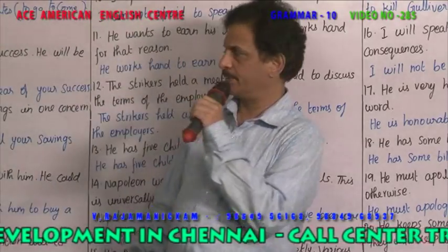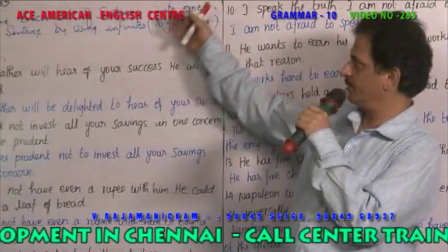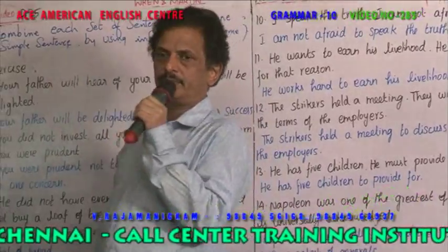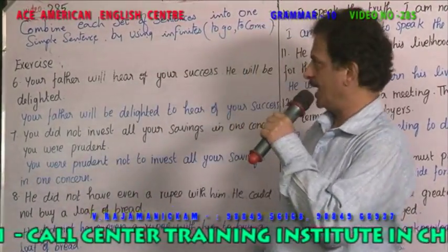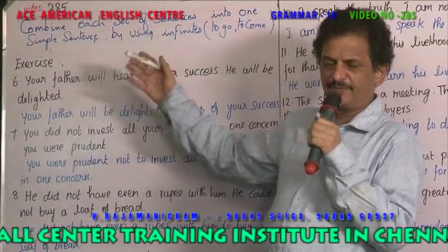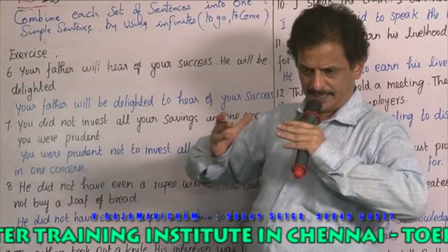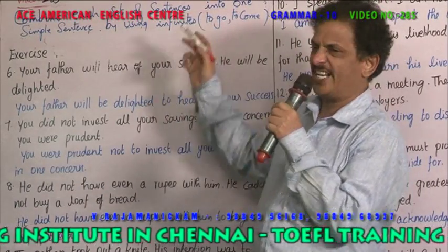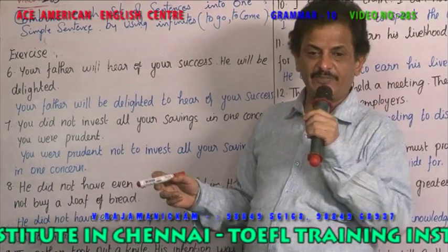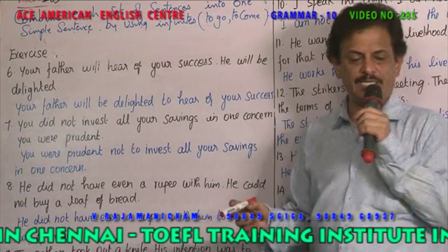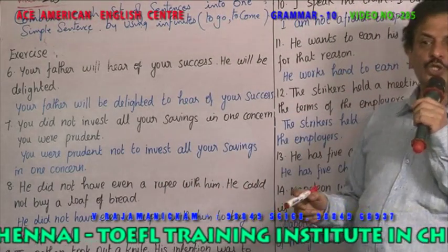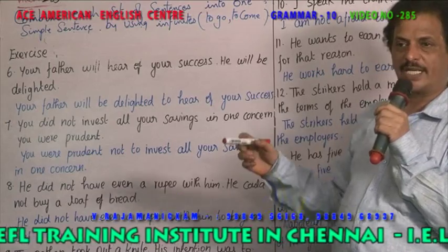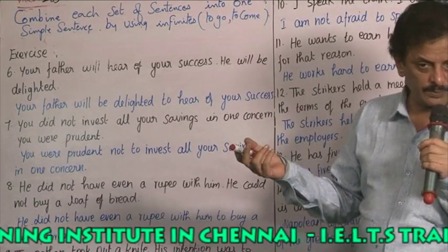Welcome to the American English Center. This is video number 285. Today we are combining different sentences using infinitives. What is an infinitive? To go, to come, to write, to sleep, to talk — 'to' plus a present tense verb is called an infinitive.